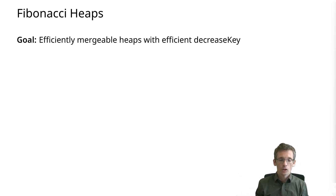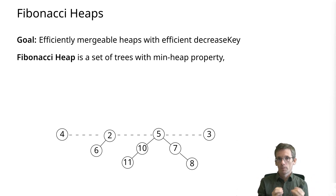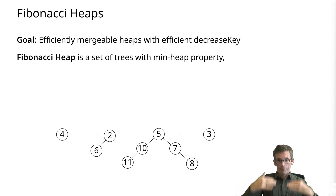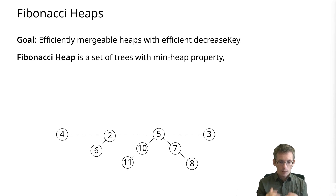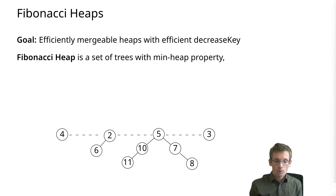What's a Fibonacci heap? Generally speaking, it's simply a set of trees with the min-heap property. As in the example here, I have four trees, two of them are just one node, and each of them has the min-heap property — parent is less than or equal to its children. They are not in any way complete binary heaps, and they are also not binomial trees, but simply trees with a min-heap property.